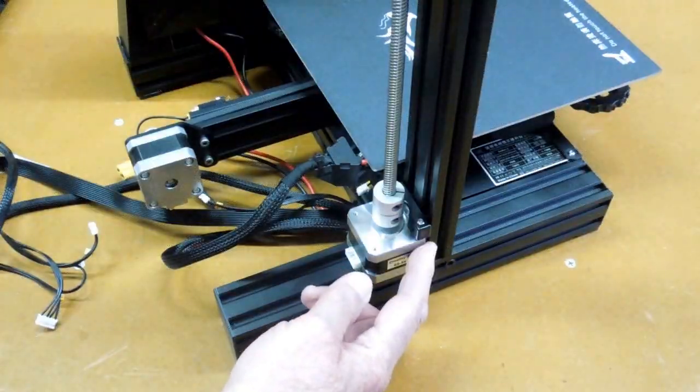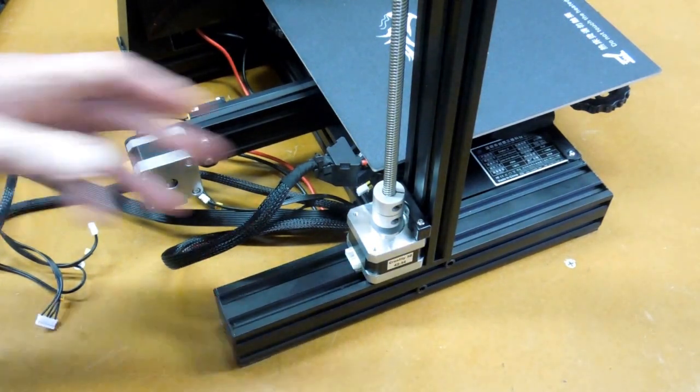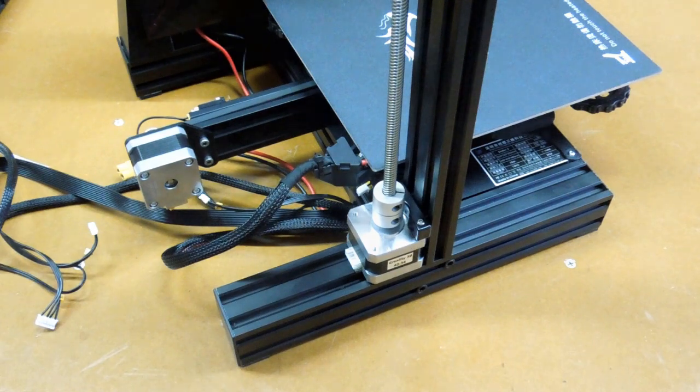There's quite a few people that are making shims and spacers that go behind this stepper to try and get it in alignment with the lead screw and this Z-axis carriage.